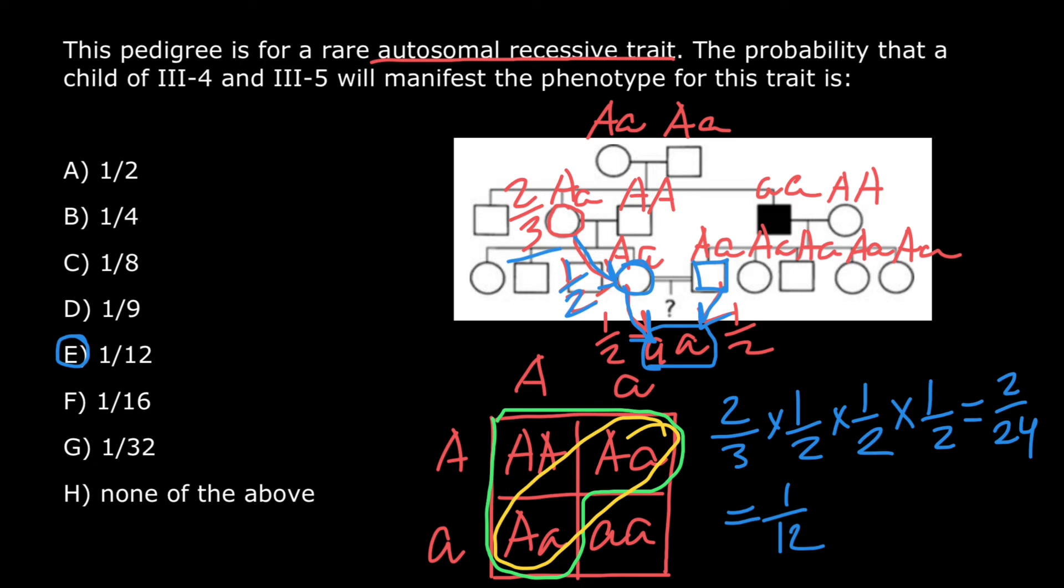So we have found that probability for this couple to have an affected child with genotype small a small a is 1 twelfth. And this is all for today, subscribe and see you in the next video, goodbye.